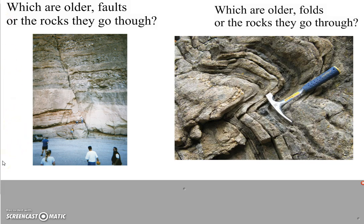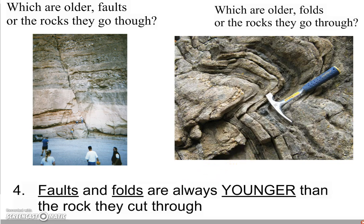Rule number four has to do with faults and folds. Looking at this picture of a huge rock outcrop with a fault going through it — which is older, the rock or the fault? You can't get a fault unless you already have the rock, so the rock has to be older than the fault. Similarly, you can't have folding unless the rocks were already there. So the fourth rule is that faults and folds are always younger than the rocks they cut through — or put another way, the rocks are always older than the faults and folds.